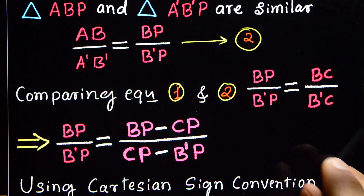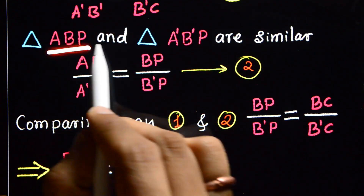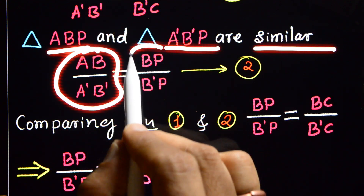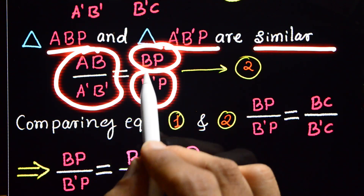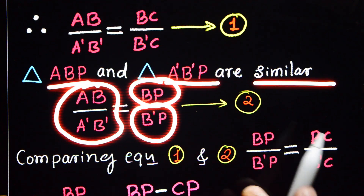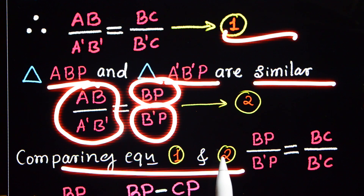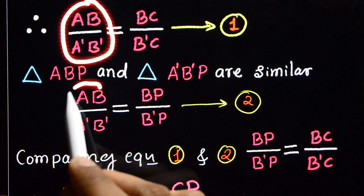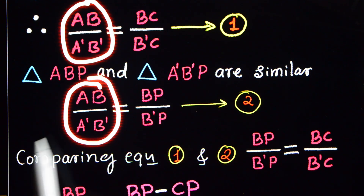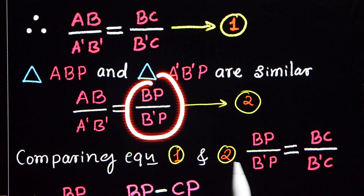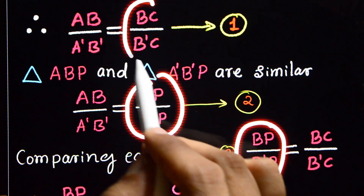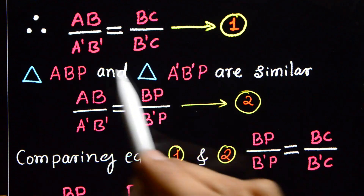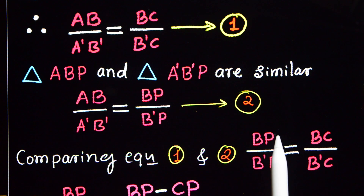From triangle ABP and A dash B dash P, they are similar. Therefore, AB divided by A dash B dash is equal to BP divided by B dash P. On comparing these two equations, BC divided by B dash C is equal to BP divided by B dash P, which gives us BC divided by B dash P equals BP divided by B dash C.